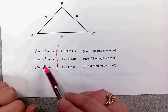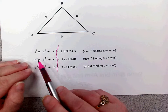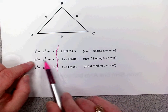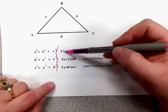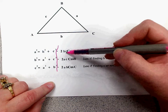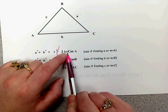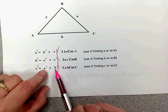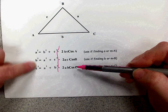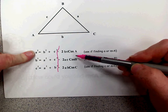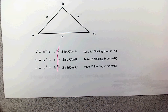This should remind you of the Pythagorean theorem — in fact one form is exactly that. Whatever is squared on one side, you have the sum of the squares of the other two. Then you always have minus two times those two sides multiplied together — B and C here, A and C there, A and B in the last — times the cosine of the angle that matches the side on the left. So cosine of A, cosine of B, cosine of C.